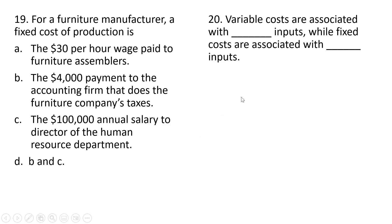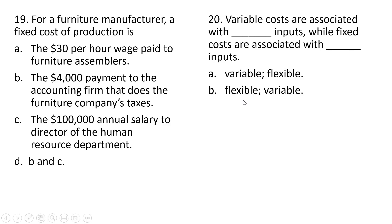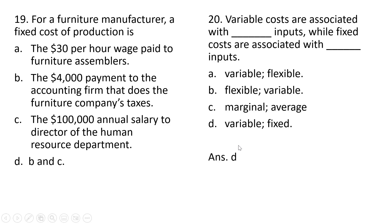Number 20: variable costs are associated with blank inputs while fixed costs are associated with blank inputs. The correct answer is answer choice D: variable costs are associated with variable inputs, and fixed costs are associated with fixed inputs.